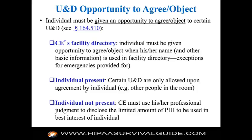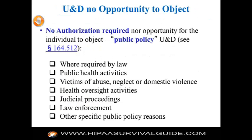If the individual is not present or is incapacitated, the covered entity must use professional judgment to disclose the limited amount of PHI in the best interest of the individual. There are cases where no authorization is required nor opportunity for the individual to object — categorized as public policy reasons: when required by law, required by public health activities, required to report victims of abuse/neglect/domestic violence, for health oversight activities, for judicial proceedings via a subpoena or other mechanism, or for law enforcement.